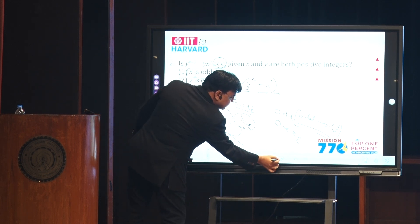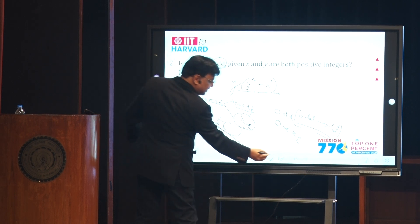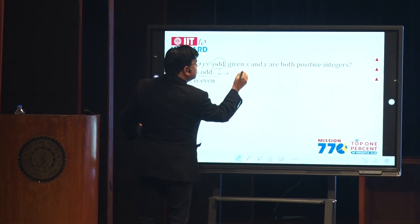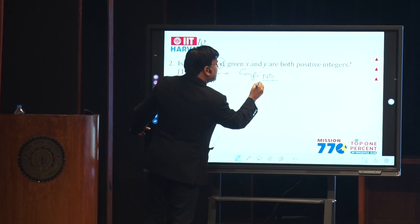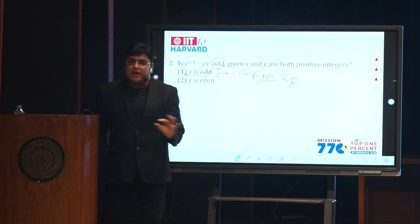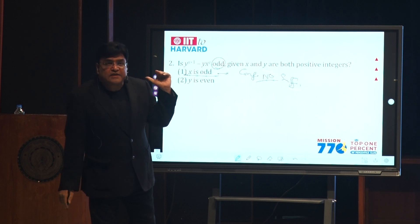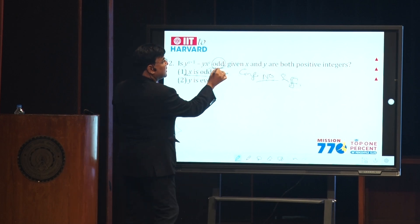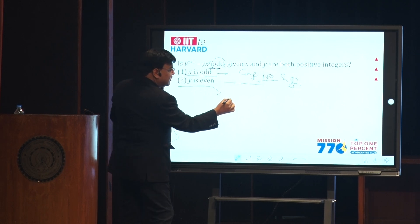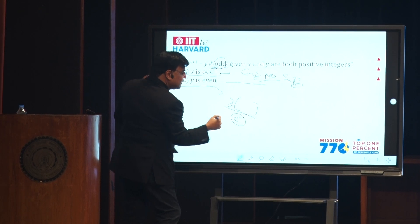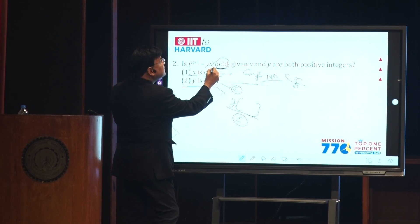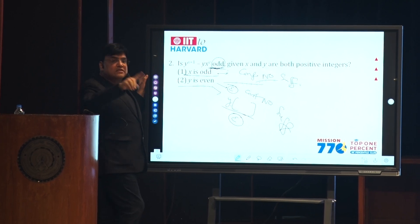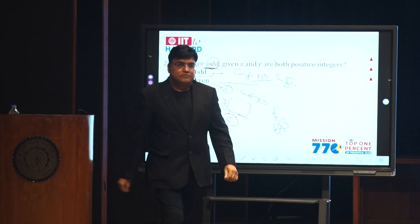Can I get a guaranteed answer that this is odd? No. So I have a confirmed 'no' answer. When x is odd and y is odd, the entire expression is even. When x is odd and y is even, the entire expression is again even. So the expression is never odd — I get a confirmed 'no' answer, which is sufficient. The correct answer to this first question is Statement 1 alone.